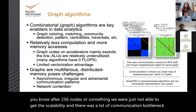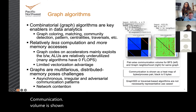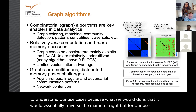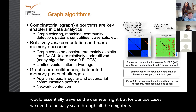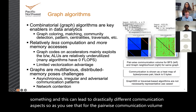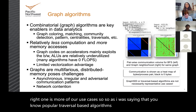Existing benchmarks like Graph 500 BFS are not sufficient to understand our use cases. What BFS does is essentially traverse the diameter, but for our use cases we need to actually scan through all the neighbors and do something. This leads to drastically different communication aspects. The pairwise communication volume for BFS is not the same as for our use cases. So popular traversal-based algorithms and benchmarks may not necessarily be representative.